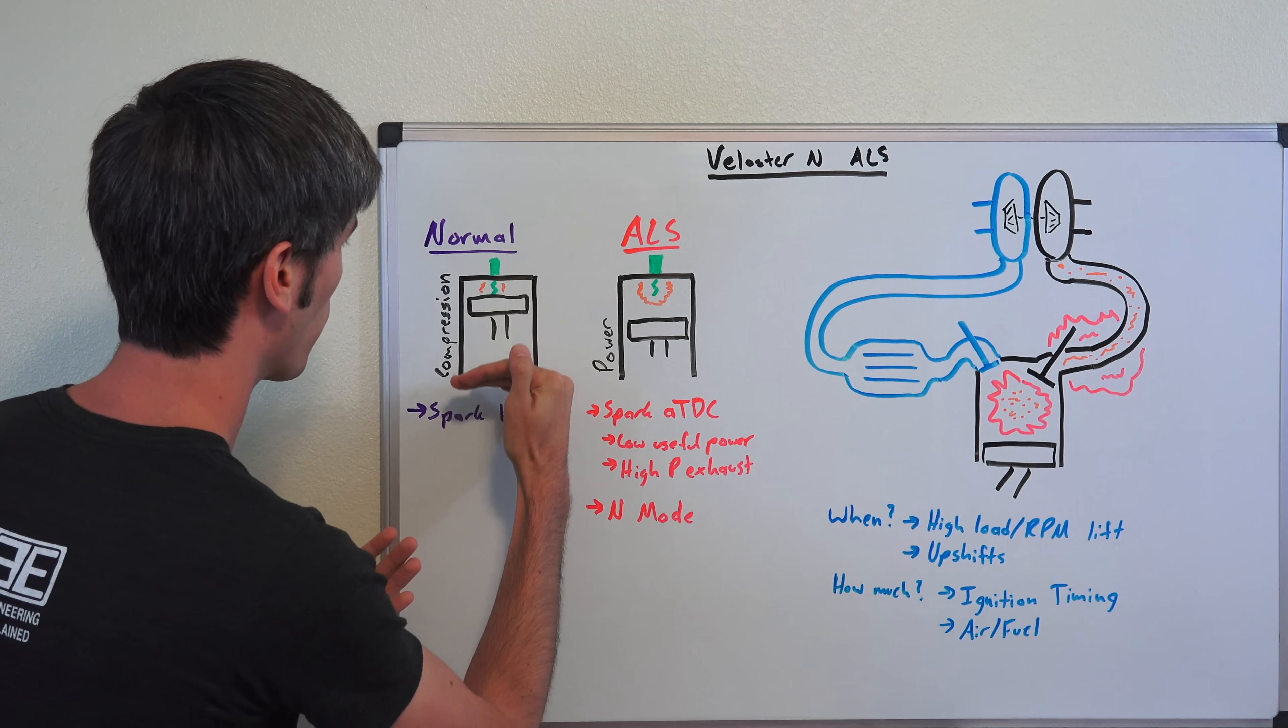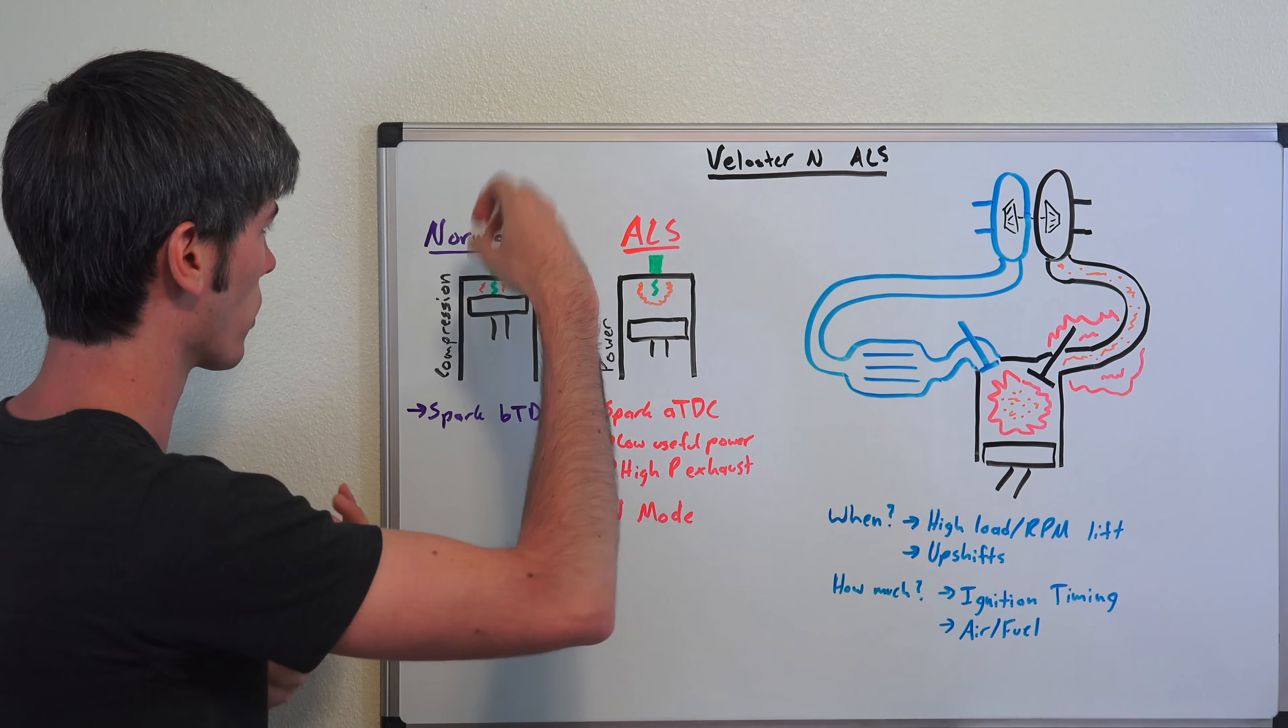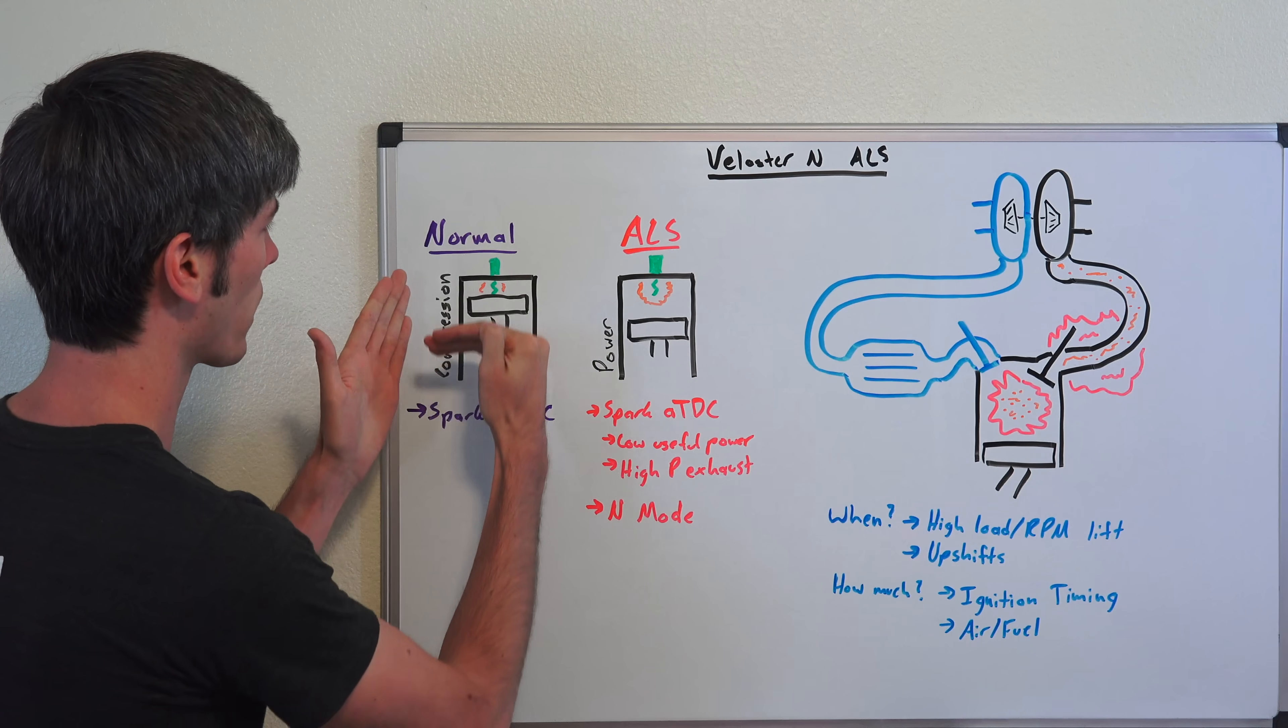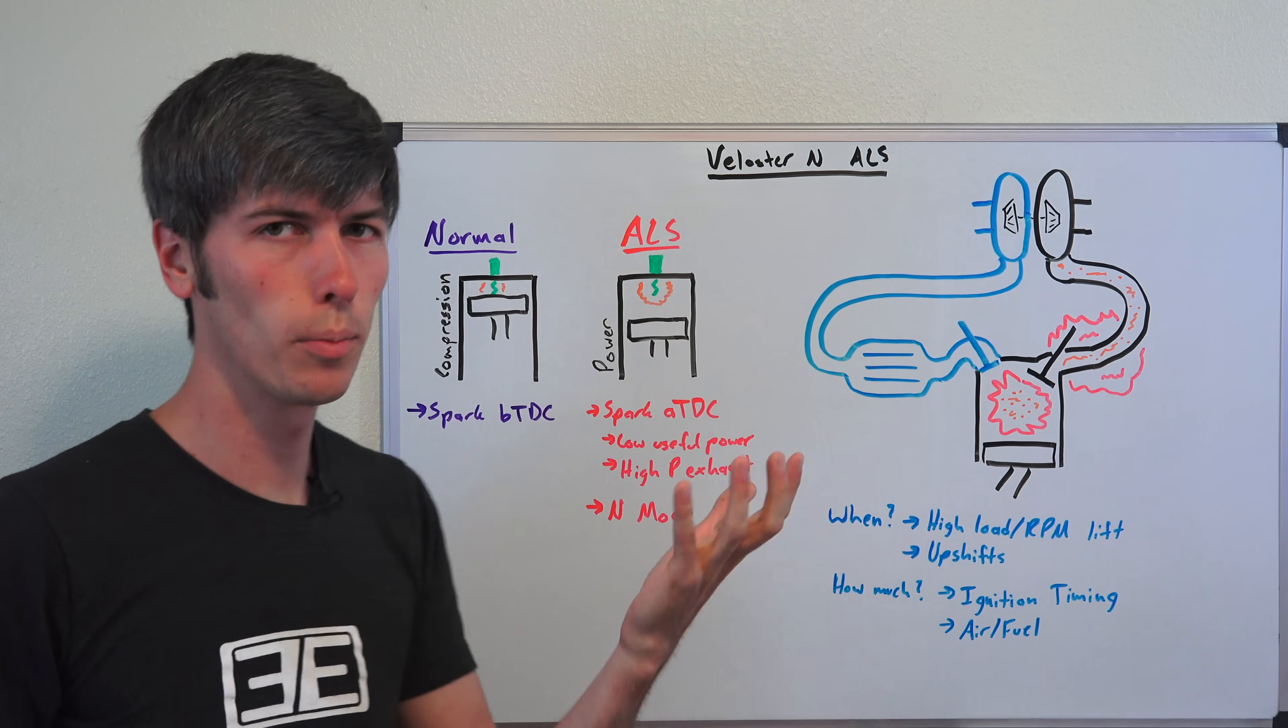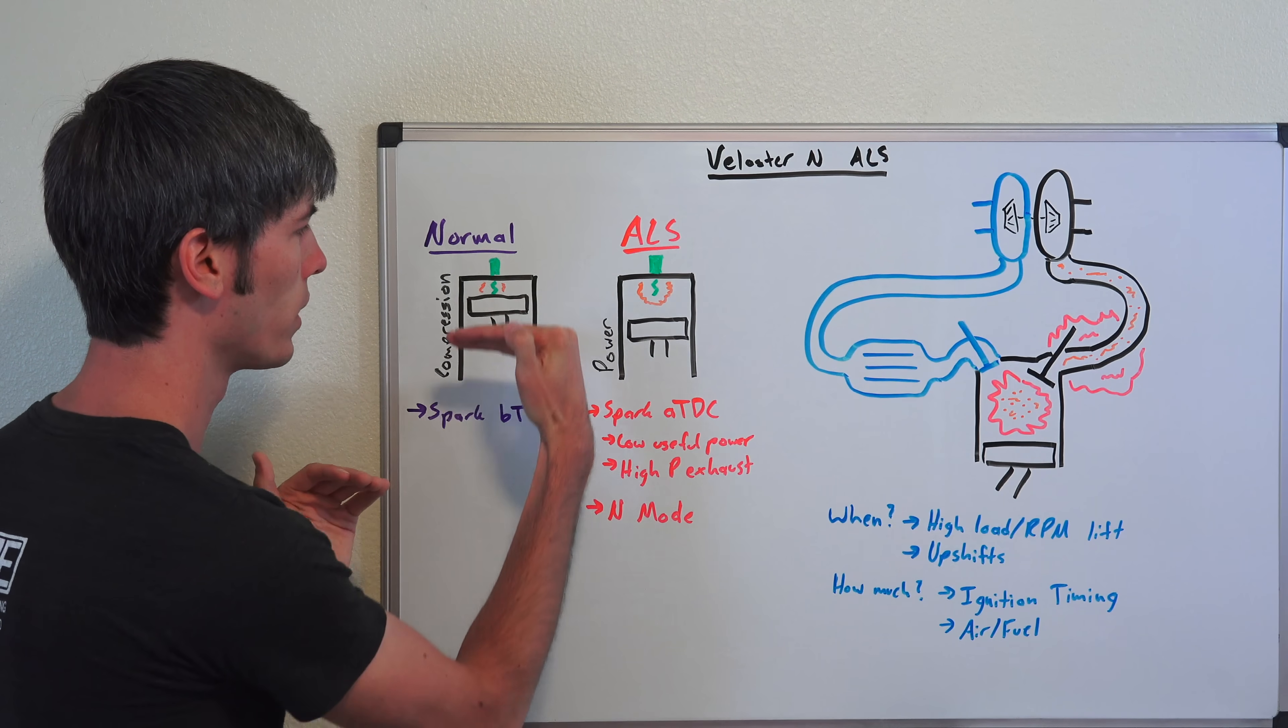Normally you have your four strokes. You have your intake stroke, you pull in air perhaps fuel, you have that compression stroke where you push that air and fuel up together. This is going to be a direct injection engine, so you're going to inject that fuel in during that compression stroke.